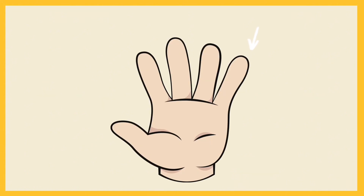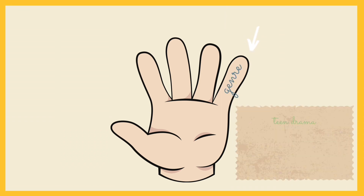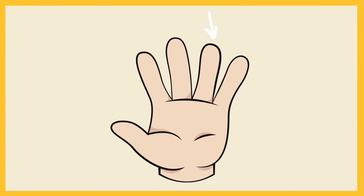Here's how it works. Start with the pinky finger. In this tiny space you will write down your story's genre — is it a teen drama, a heartwarming rom-com, or perhaps a character-driven comedy? If your story is an adaptation, be sure to include the name of the original book and its author.